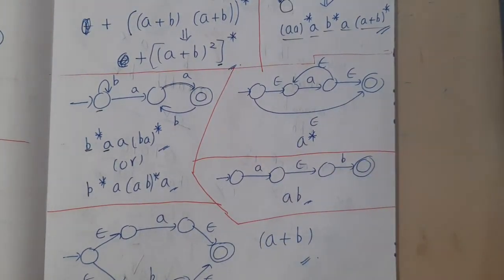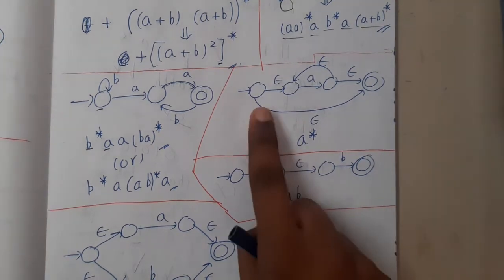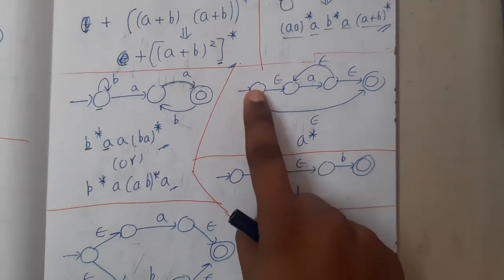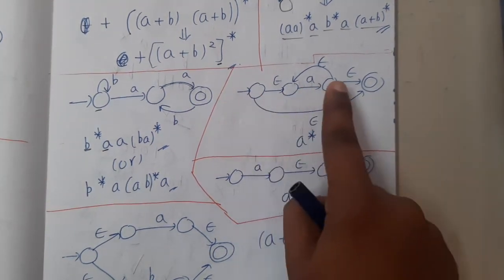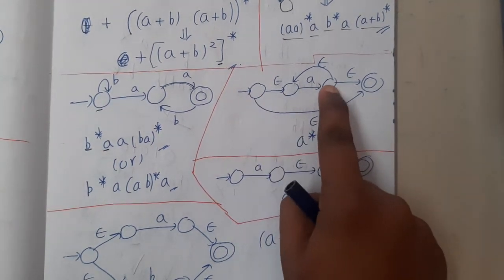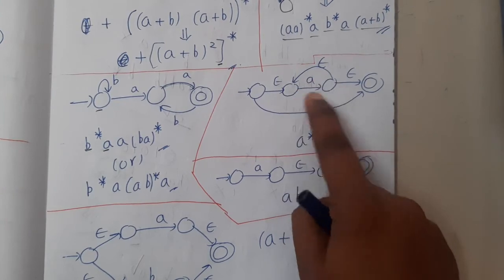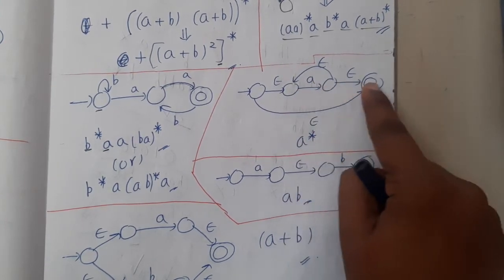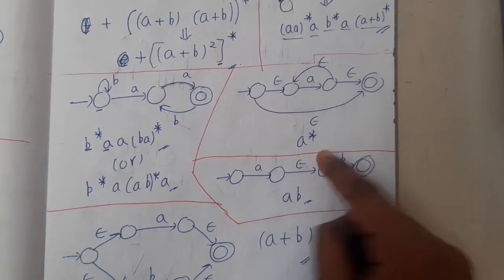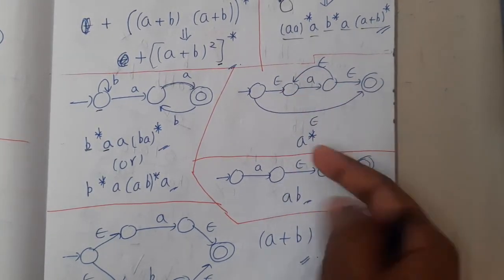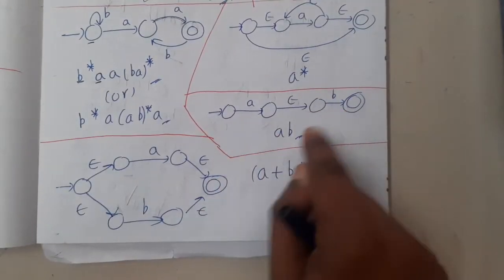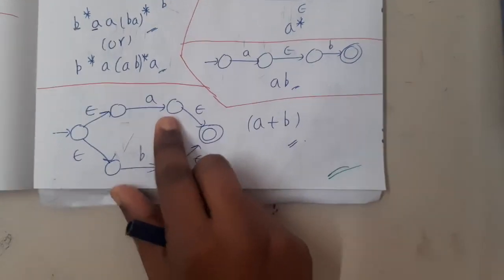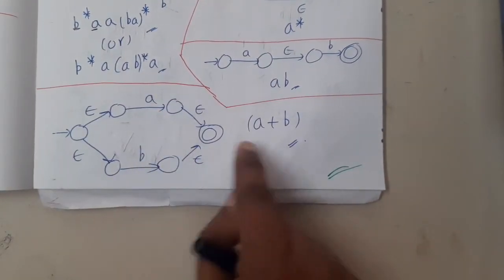Moving on: first b* is mandatory, then one single 'a', then how many b's do you want — so (ba)*. Similarly, observe this carefully — if I am here, I can go free of cost via epsilon to another state, execute one 'a', as many times as I want, and go back free. So indirectly that's a*. Then similarly there is a 'b', and then (a+b).